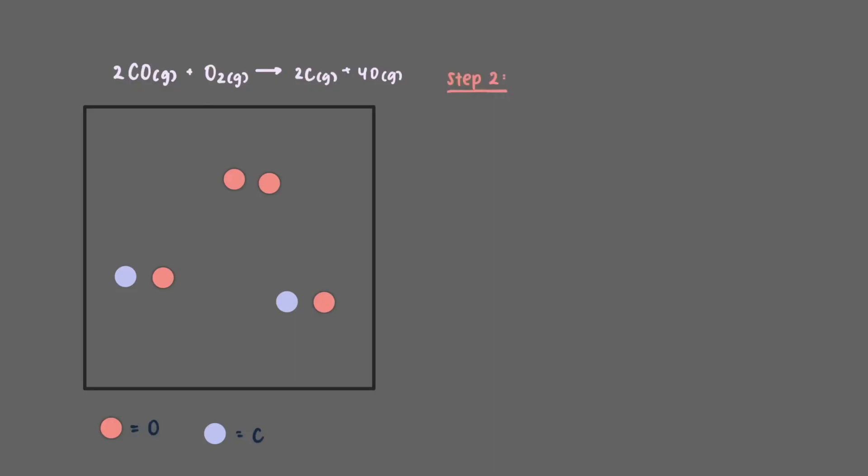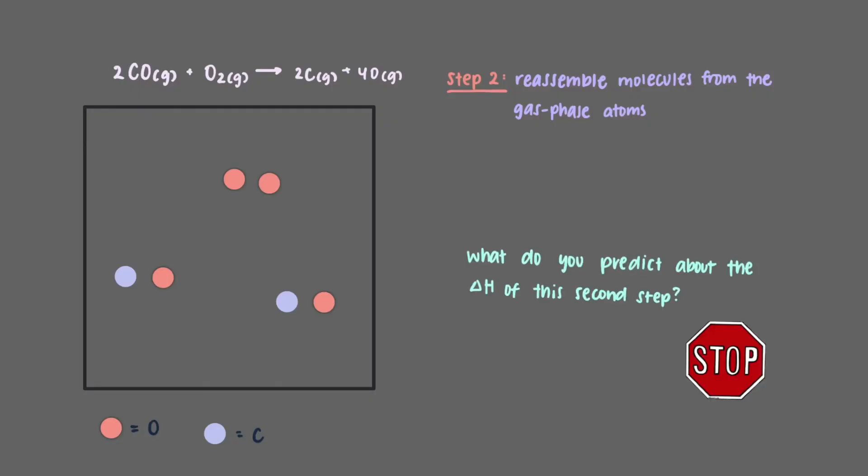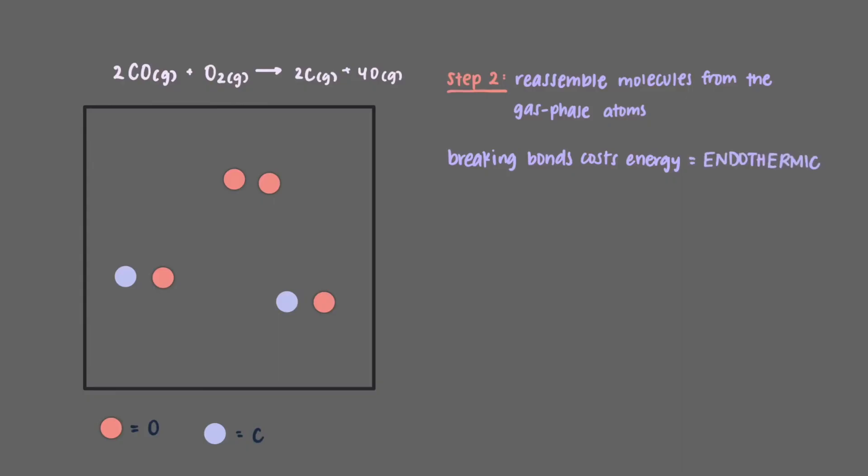The second step of our crazy process is to reassemble molecules from our gas phase atoms. What do you predict about the delta H of this second step? Breaking bonds costs energy, so this process is endothermic, so making them releases energy. This process is exothermic.